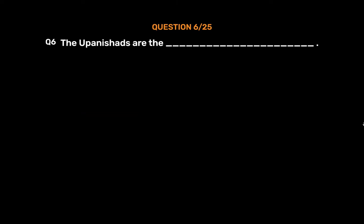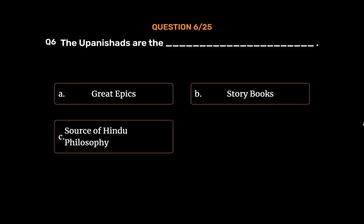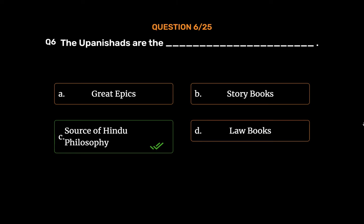Question No. 6. The Upanishads are the _____. Option A: Great epics. Option B: Story books. Option C: Source of Hindu philosophy. Option D: Law books. The correct answer is Option C: Source of Hindu philosophy.